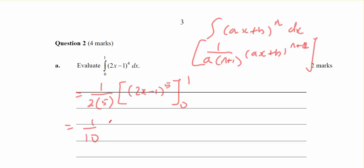So 1 on 10, I'll put a 1 in there, 2 minus 1 is 1 to the power of 5, minus negative 1 to the power of 5, which is 1 on 10, 1 minus minus 1, which is 2 on 10, which equals 1 fifth.